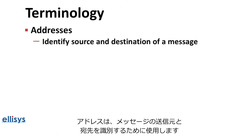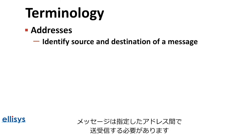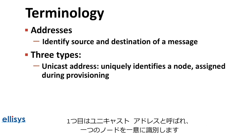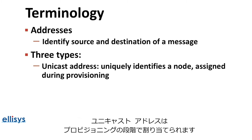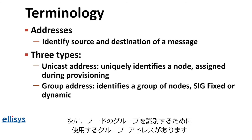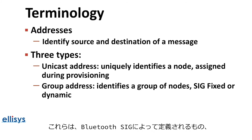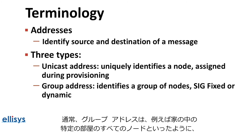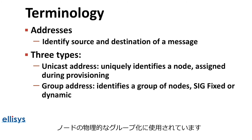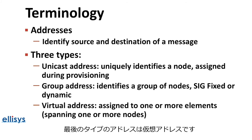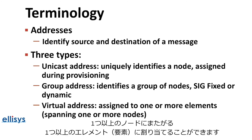Addresses identify the source and destination of a message, and messages must be sent to and from an address. There are three types of addresses in Bluetooth Mesh. The first is the unicast address, which uniquely identifies a single node and is assigned during the provisioning process. Second, a group address is used to identify a group of nodes — these can be SIG-fixed, defined by the Bluetooth SIG, or dynamic addresses defined by the user via a configuration application. Group addresses generally reflect a physical grouping of nodes, such as all nodes within a specific room in a house. The last type are virtual addresses, which may be assigned to one or more elements spanning one or more nodes.